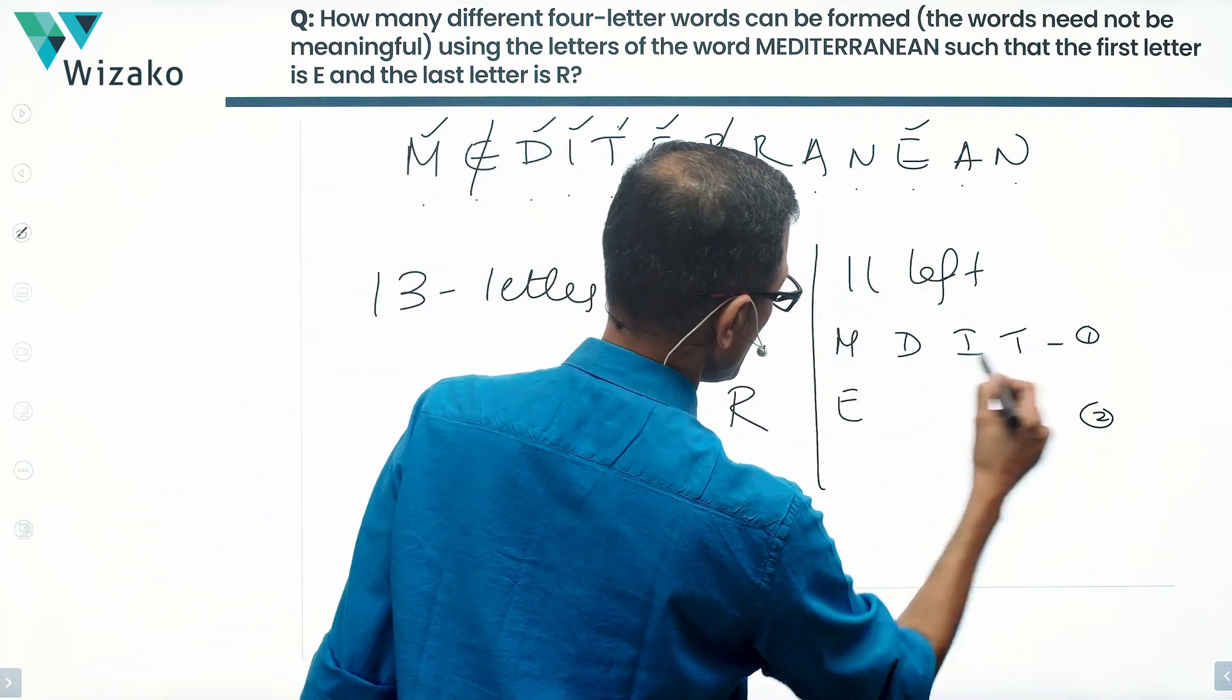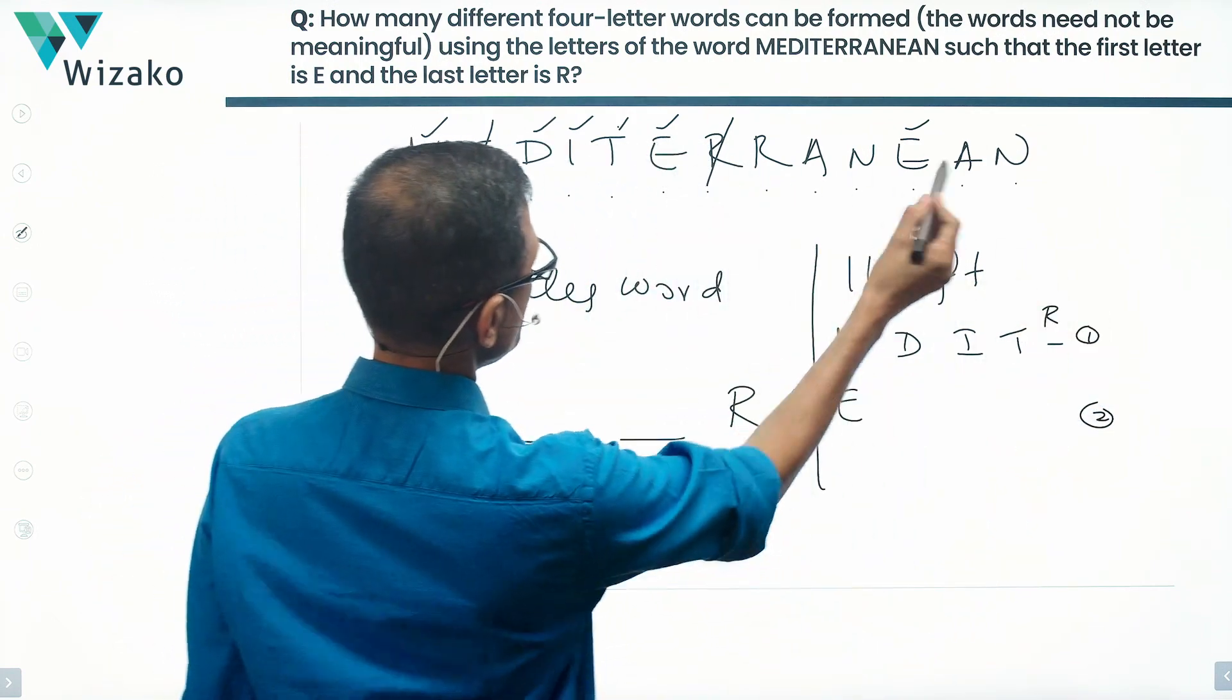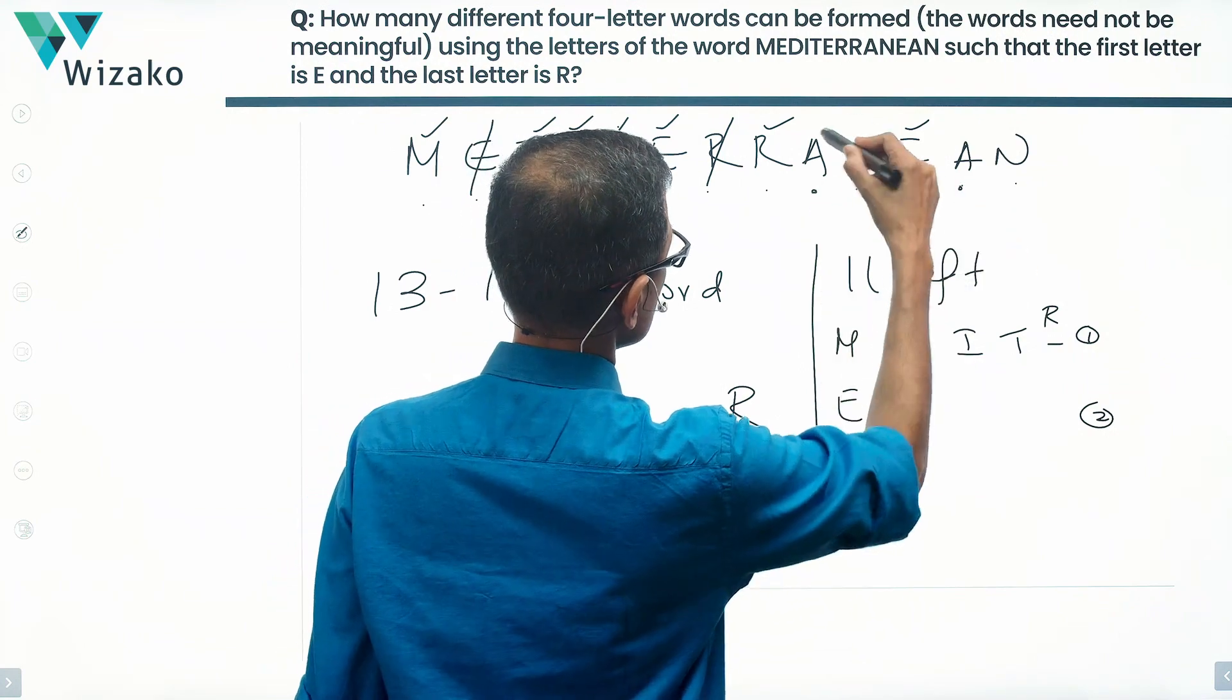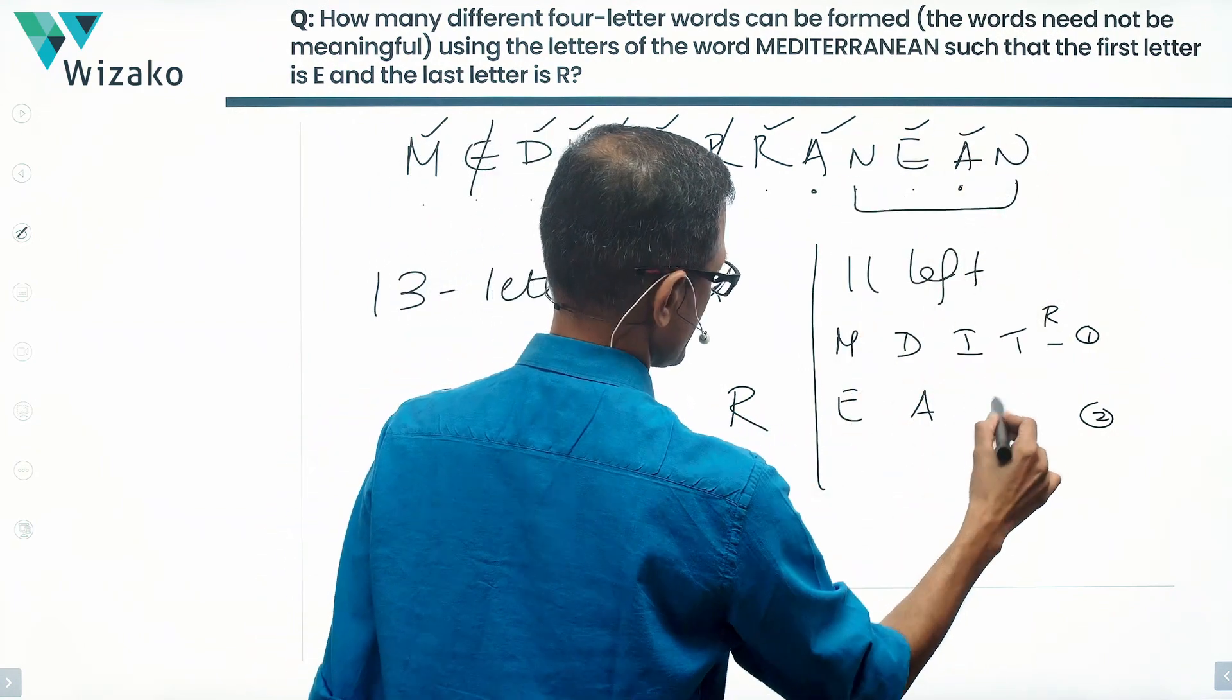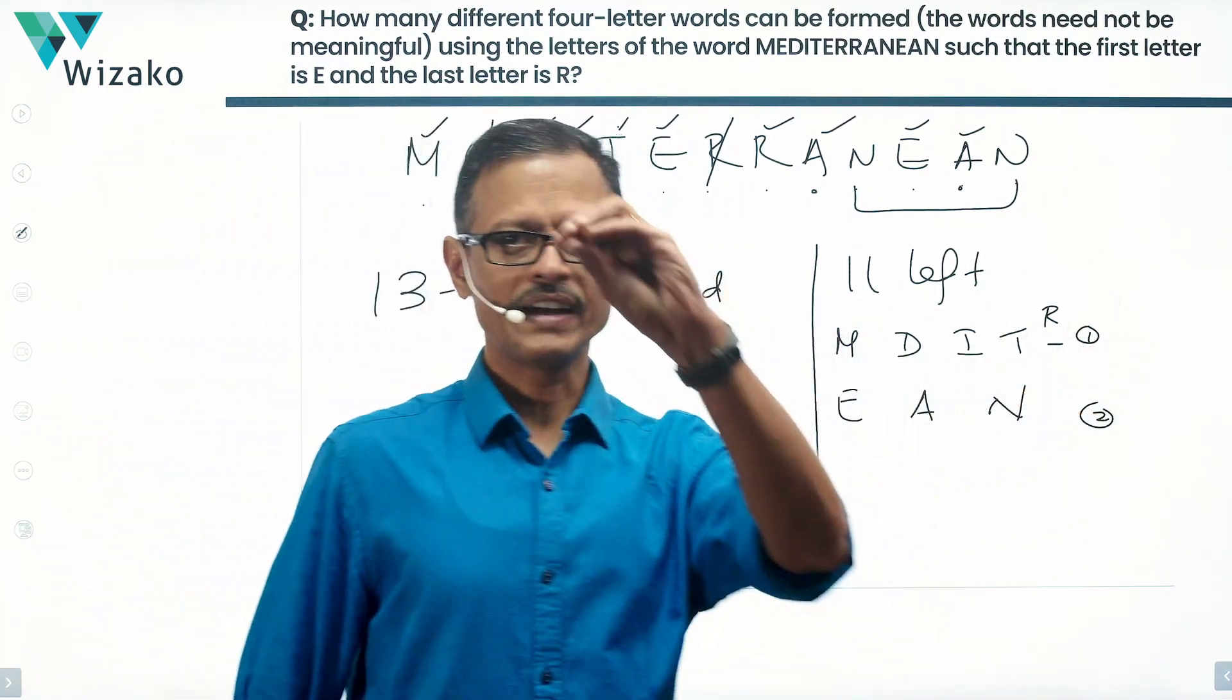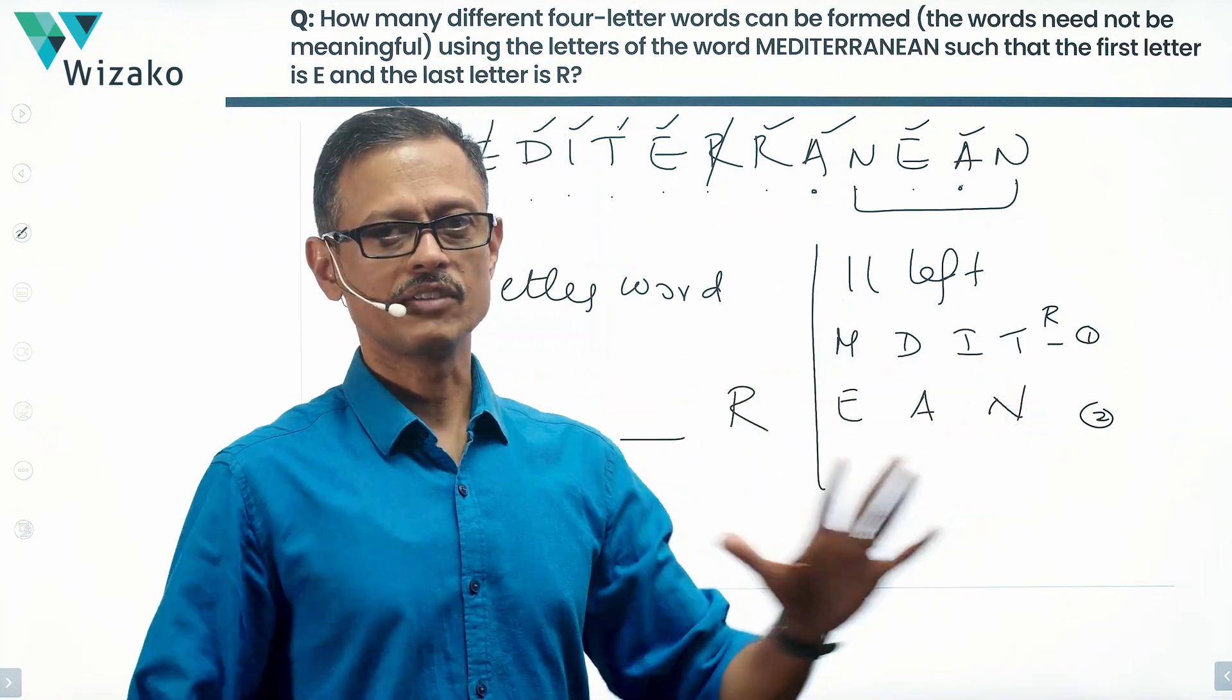How many R's? Only one R left because there are a total of two R's. One R has already been taken. So count of one: M, D, I, T, R. E appears twice, A appears twice, and N appears twice. Let's check if the addition makes sense: M, D, I, T, R are five letters. Three letters appearing twice, which is six. Six plus five equals 11. This is what we have.